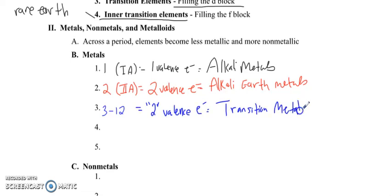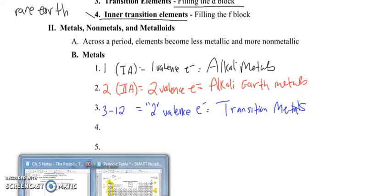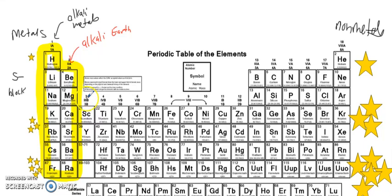These are what you would classically think of as your everyday metals. So let's look at those right here. So 3 all the way through 12, and these are our transition metals.